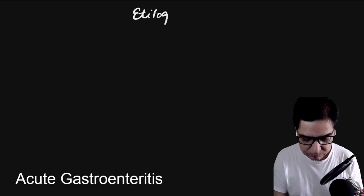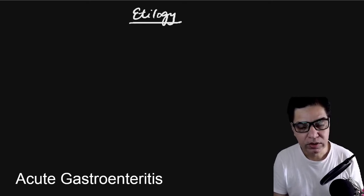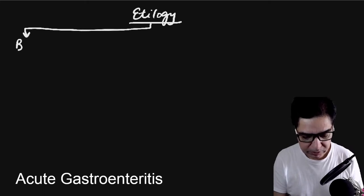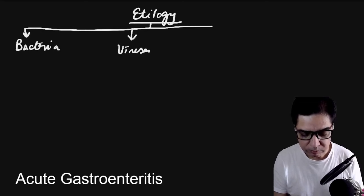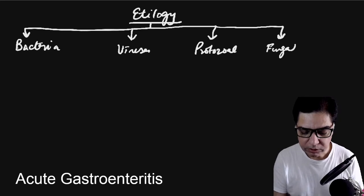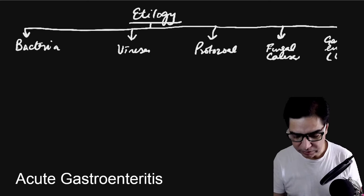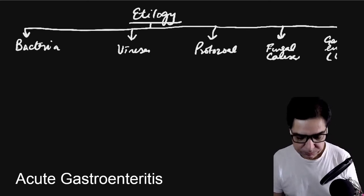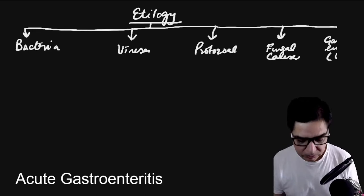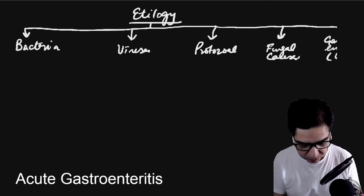As far as etiology is concerned, there are many causes of acute gastroenteritis. Bacteria can cause gastroenteritis, as can viruses, protozoa, and fungi. Sometimes gastroenteritis is related to other systemic illnesses or inflammatory conditions. Now let's start with the bacteria.